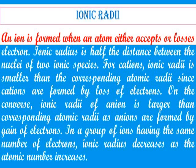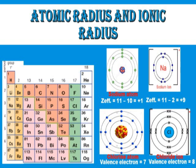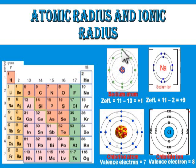For anions, the ionic radius is larger than the corresponding atomic radius, because anions are formed by gain of electrons. Let's use this to illustrate. This is a sodium atom and this is the sodium ion. The atomic structure of sodium: the first shell has 2 electrons, the second shell has 8, and the last shell has 1. It is easy to give out this one electron. When sodium gives out this one electron, it becomes the sodium ion, with a positive charge.